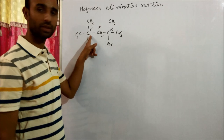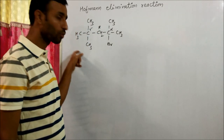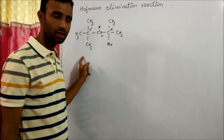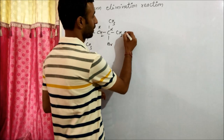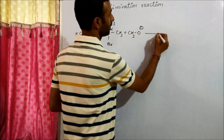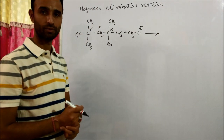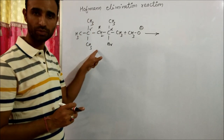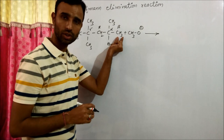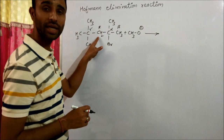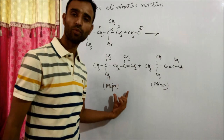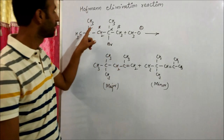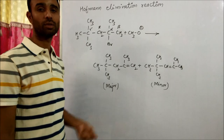Case three: when the gamma carbon is crowded — when the gamma carbon is heavily substituted — then the product formed is as per Hofmann's rule. When the gamma carbon is highly substituted, hydrogen is removed from the less crowded side. Again, the Hofmann product dominates over the Zaitsev product because the gamma carbon is highly substituted.